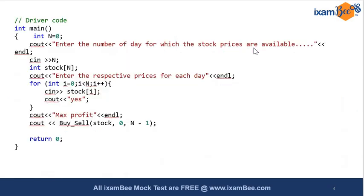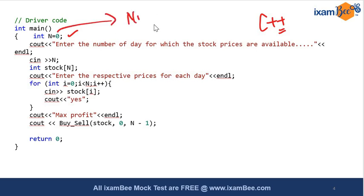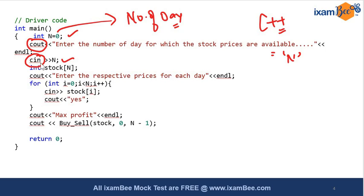Let's take the code. This is the driver code in C++ — in SEBI you have to write code from scratch. We take a variable n initialized to 0, which represents the number of days for which stock prices are available. We prompt the user to enter the value of n, then read it using the cin operator. For those new to C++: cout outputs to console and cin fetches values entered by the user.